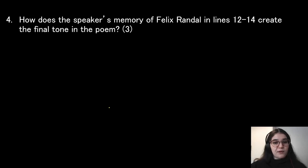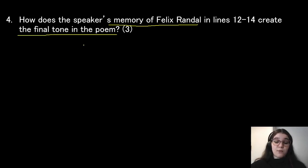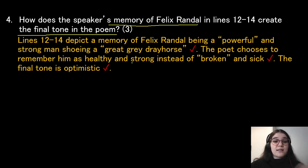How does the speaker's memory of Felix Randall in lines 12 to 14 create the final tone of the poem? We have to mention what the memory is and how it helps create the tone. Lines 12 to 14 depict the memory of Felix Randall being a powerful and strong man shoeing a great grey dray horse. The poet chooses to remember him as healthy and strong instead of broken and sick. The final tone is therefore optimistic.